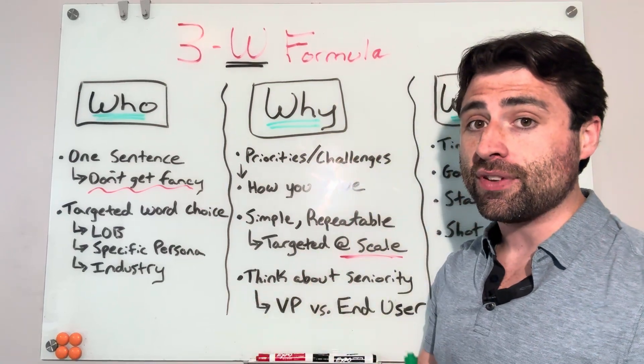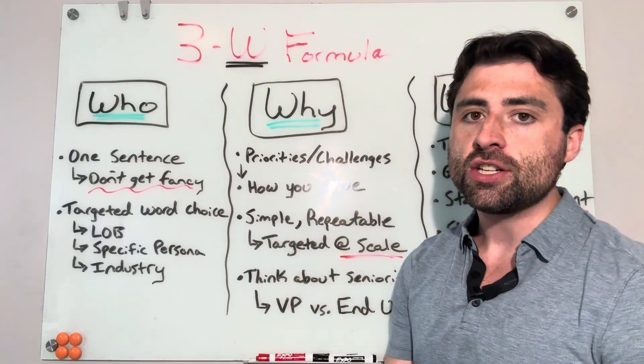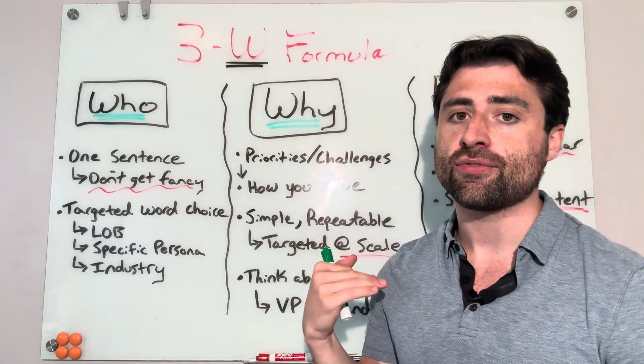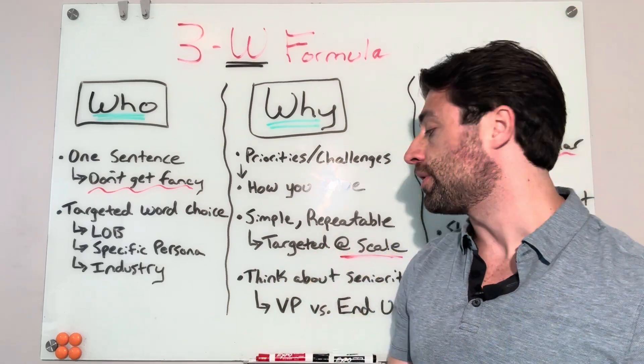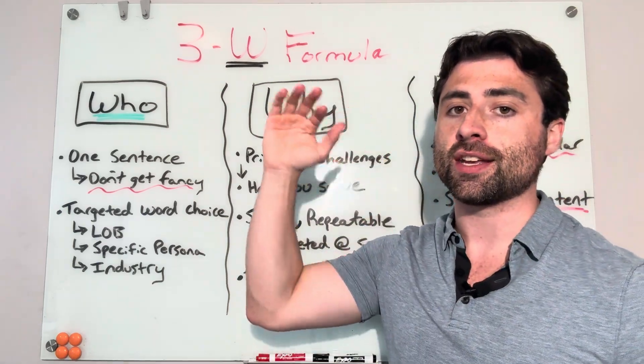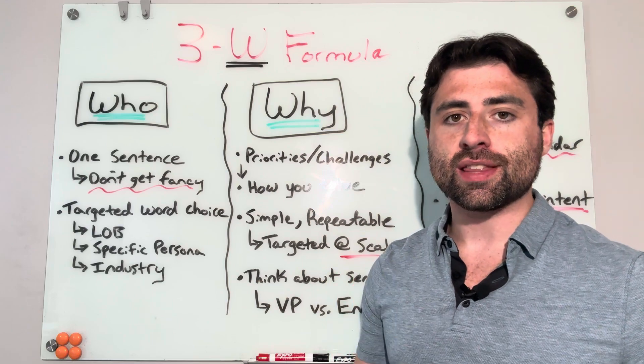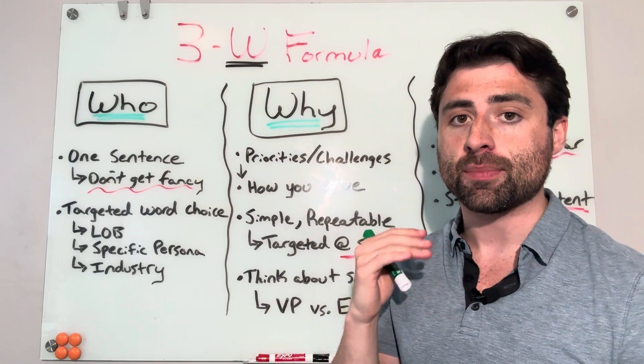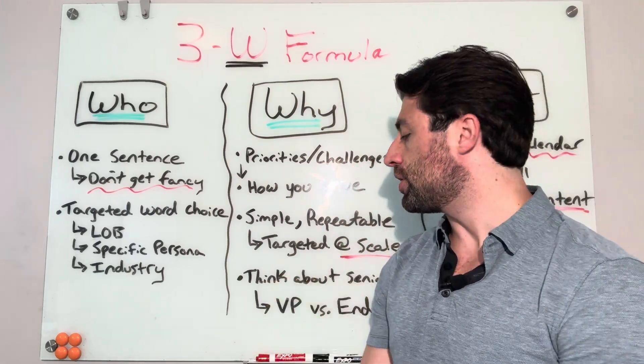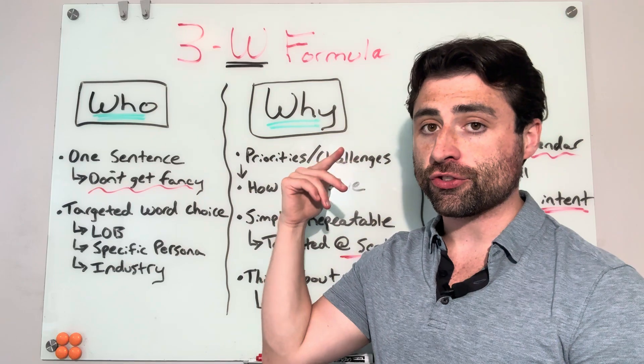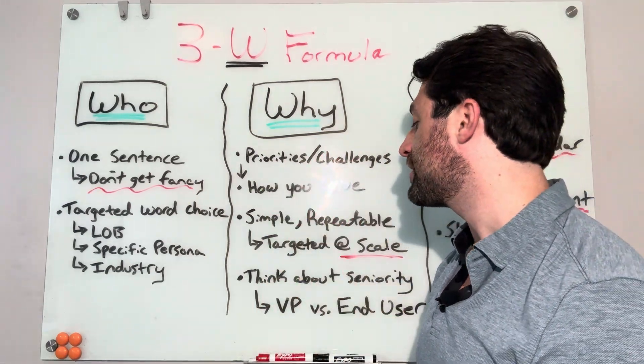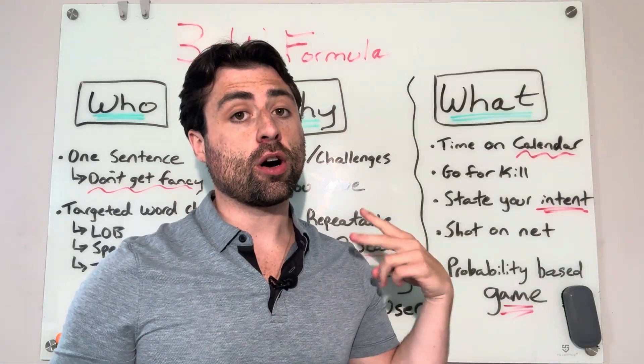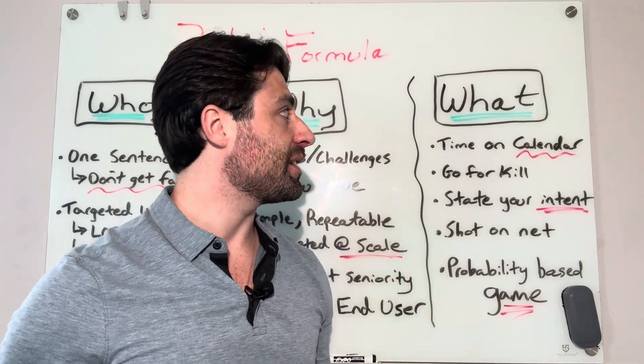They're either executives like VP or even director and above, or they're end users of the system. So in finance, for example, those executives, it could be the CFO or the VP of finance, where the end users are more like financial analysts. And you want to plug and play words that target executives versus end users. End users are usually thinking more about tactical pains, like pains about their actual physical day-to-day job that you can call out that will resonate with them, where executives are usually more concerned with higher level strategic business pains. And a lot of these you can rinse and repeat no matter what line of business they're in or what industry that they work in. So total, we've answered who we are and why we're calling in about three sentences up to this point. We're probably like 20 seconds into the cold call.